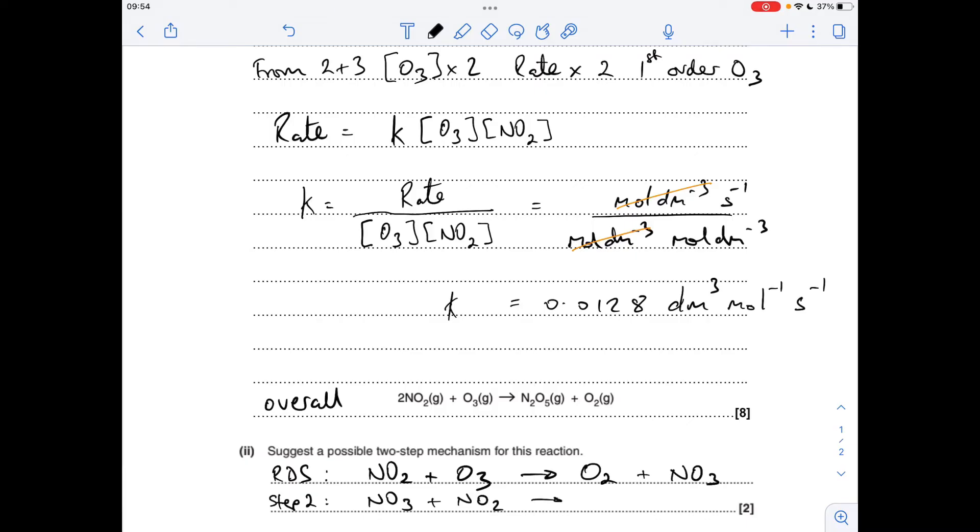We've got the O2 we need. We haven't got the N2O5. So if we combine NO3 and NO2, we do get N2O5. And obviously, when you add those two steps together, the NO3s will cancel and we're left with two NO2s plus an O3, making an N2O5 and an O2. So that mechanism is valid.